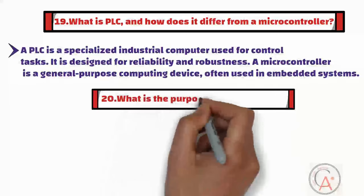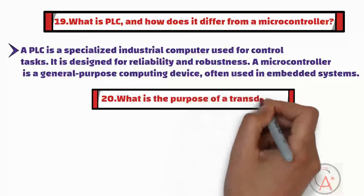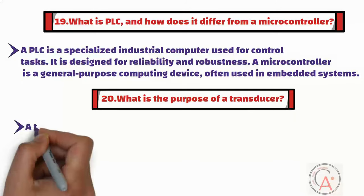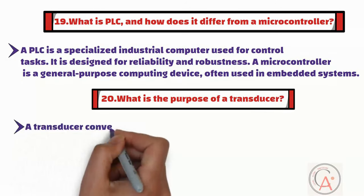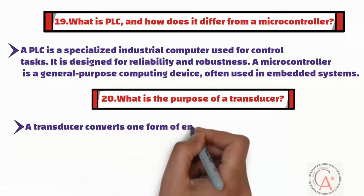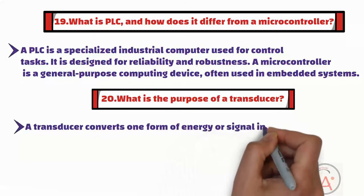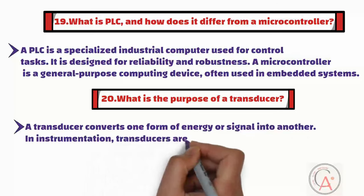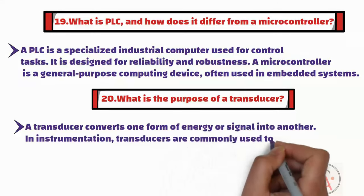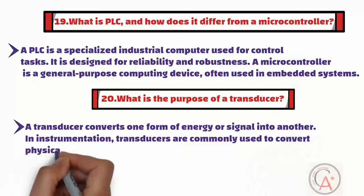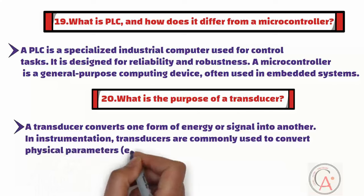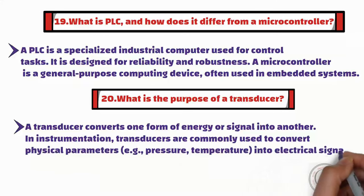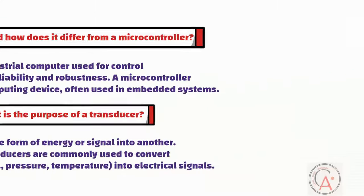The twentieth question is: what is the purpose of a transducer? A transducer converts one form of energy or signal into another. In instrumentation, transducers are commonly used to convert physical parameters such as pressure, temperature, level, and flow into electrical signals.